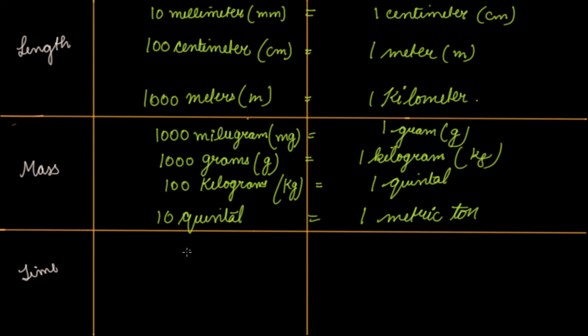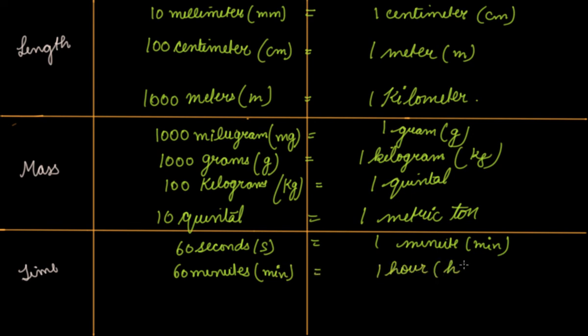If I say time, then 60 seconds is equal to 1 minute. 60 minutes is equal to 1 hour. 24 hours is equal to 1 day. 365 days is equal to 1 year. 10 years is equal to 1 decade.